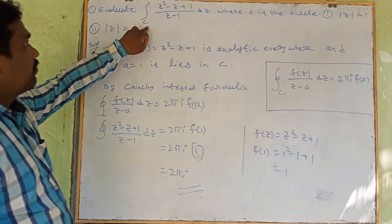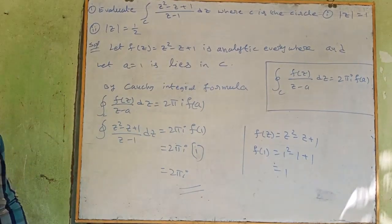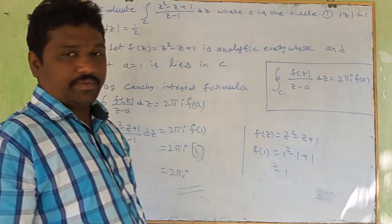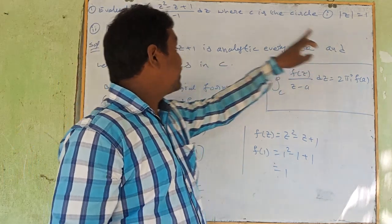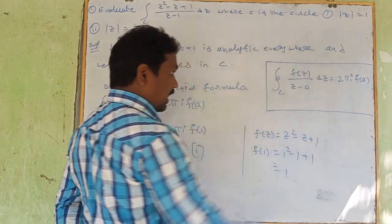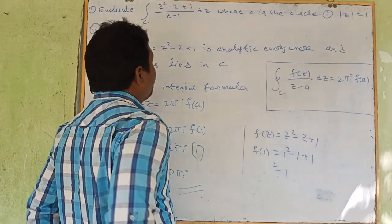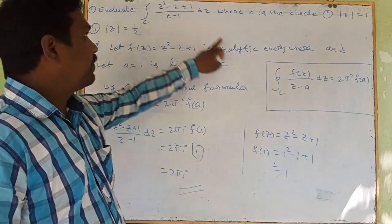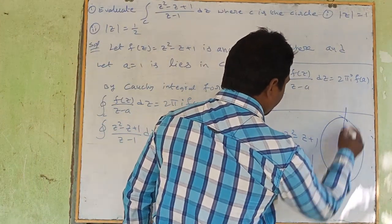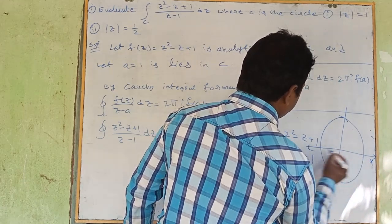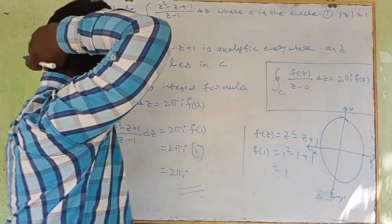First problem: evaluate the integral over C of (z² minus z plus 1) divided by (z minus 1) dz, where C is the circle |z| = 1. First part: let F(z) = z² minus z plus 1, which is analytic everywhere since every algebraic function is analytic. Let a = 1. Comparing with the Cauchy integral formula, the denominator is (z minus 1), so a = 1.